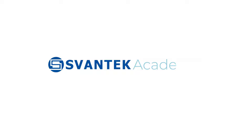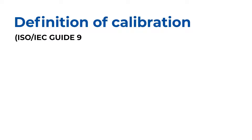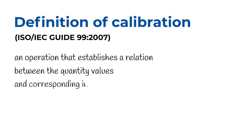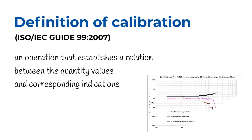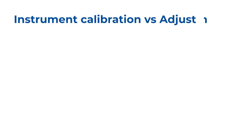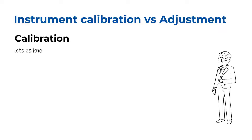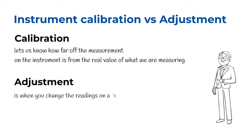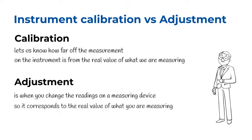According to the ISO IEC Guide 99-2007, calibration is an operation that establishes a relation between quantity values and corresponding indications. Instrument calibration lets us know how far off the measurement on the instrument is from the real value of what we are measuring.